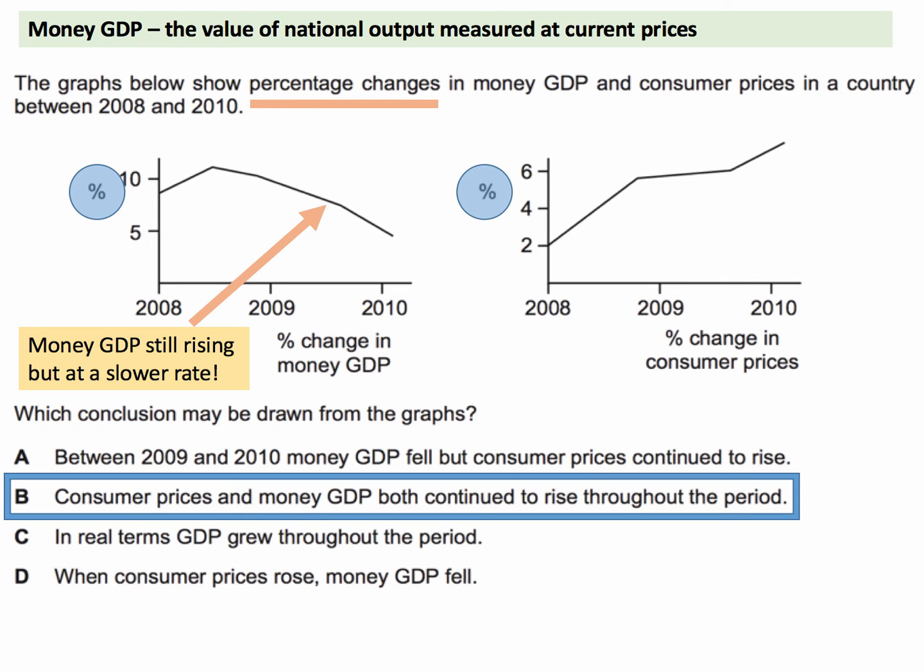Let's quickly go through the other answers. Option A: between 2009 and 2010, money GDP fell but consumer prices continued to rise. Well, on the left hand side, money GDP rose throughout the entire time period. So we think B is right.